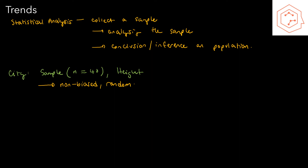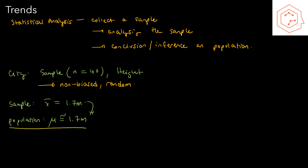Suppose that after collecting my data, I find that the average height within my sample — denoted by x-bar — is equal to 1.7 meters. Assuming the sample was collected properly, I can then conclude that the population should also have a population average, denoted by mu, approximately equal to 1.7 meters. That's why statistical analysis is so powerful: it allows you to form a conclusion about an entire population from a smaller sample. In this case, we're only using one variable, so this is univariate data.